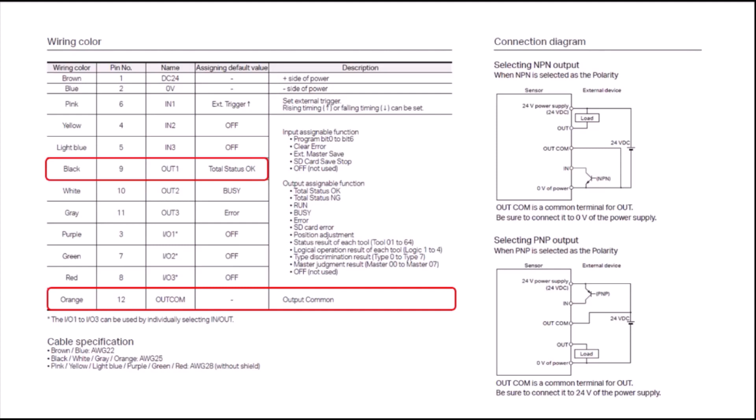Next, we're going to take a look at our outputs. In this example, I'm just going to use output 1, which is my black wire, and by default, this has a function of total status OK. However, this is configurable in the software, which I will show in just a minute.